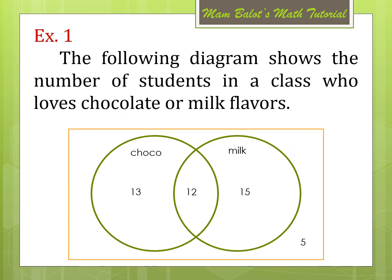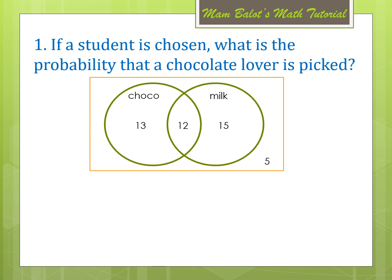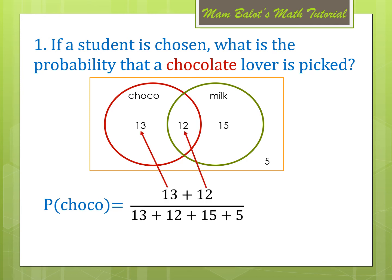Let us go back to example number 1, which shows the number of students who love chocolate or milk flavors. Question number 1: if a student is chosen, what is the probability that a chocolate lover is picked? The probability that a student loves choco would be 13 plus 12 (students in the choco circle) divided by all the numbers in the diagram — 13, 12, 15, and 5. That would be 25 over 45, which can be reduced to 5 over 9.